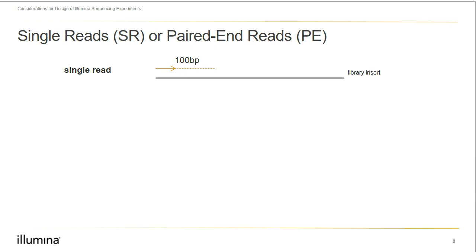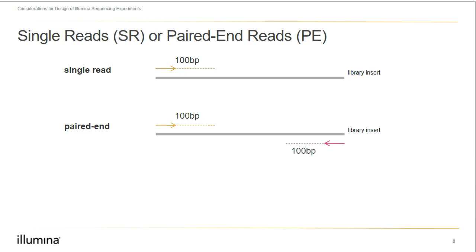Next, let's think about paired-end reads. When using paired-end reads, we'll sequence in the 5' to 3' direction, and then after turnaround chemistry, we'll also sequence in the 3' to 5' direction — essentially reading towards the middle of the insert. Typically we sequence symmetrically, meaning read 1 and read 2 will be the same length — in our example, 100 base pairs. There are a few exceptions, but normally the read length is the same for both read 1 and read 2.